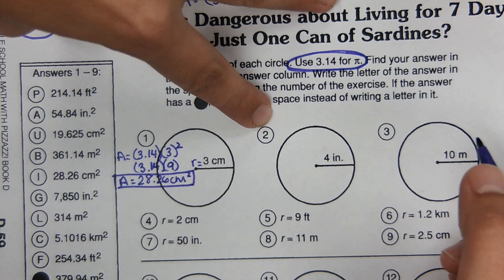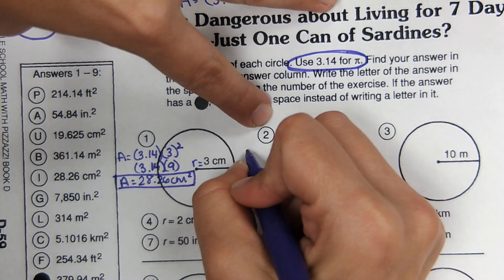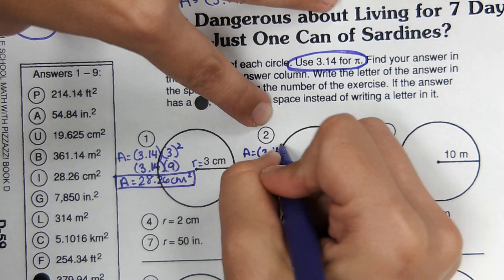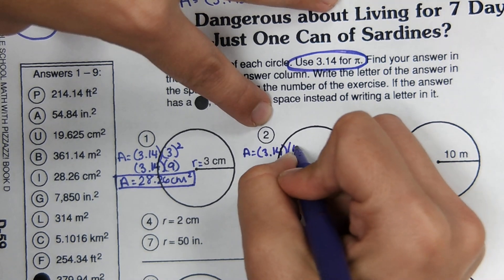So for number two, with me, area equals 3.14. The radius here is four squared.